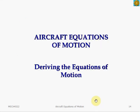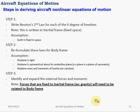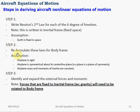Now we have covered the preliminaries. Let's derive the aircraft equation of motion. There are three major steps. First, we write Newton's second law for each of the aircraft's motions — essentially the equation F equals MA — and note that this equation is written in the earth fixed frame, where we assume the earth is fixed in space. This is a valid assumption since our aircraft remains inside the earth's atmosphere. The second step is to reformulate Newton's second law in the body frame, where we assume the airplane is a rigid body.